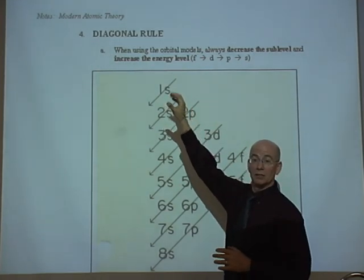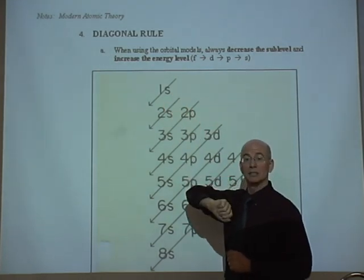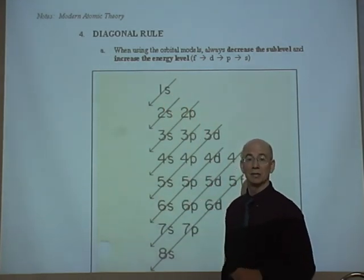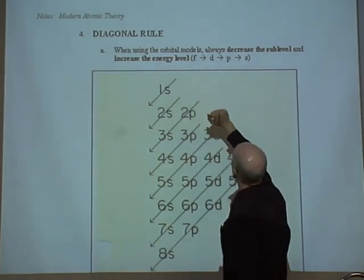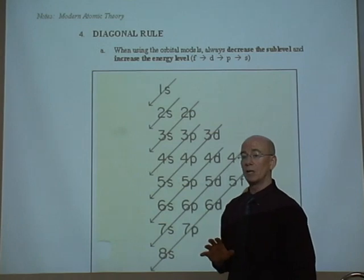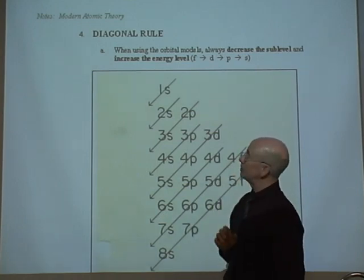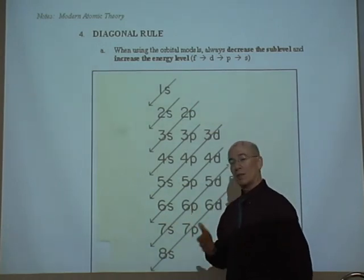The one I recommend is the diagonal rule. I'm going to show you how to set it up and then we'll do one example together so you can see how it works. When using the orbital models, we always decrease the sublevel and increase the energy level. Well, that's the understanding.